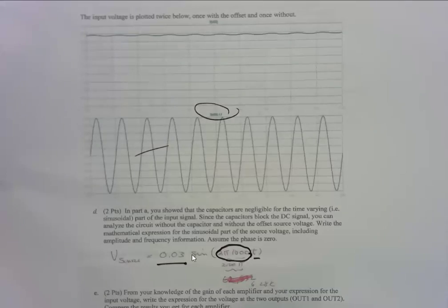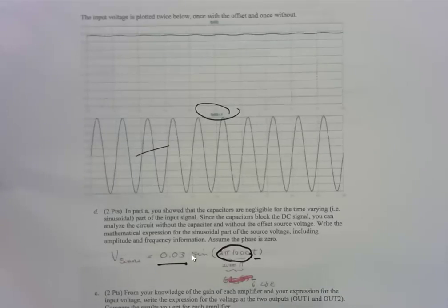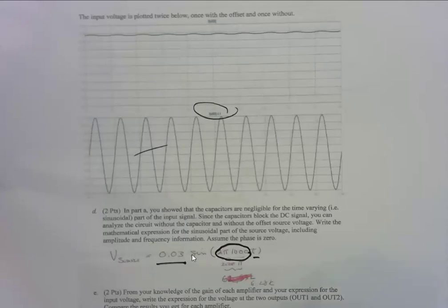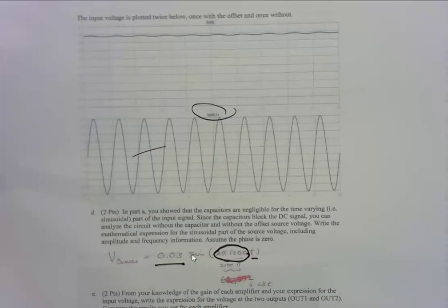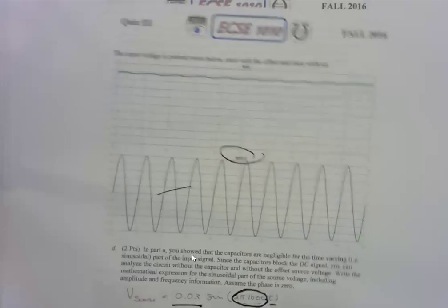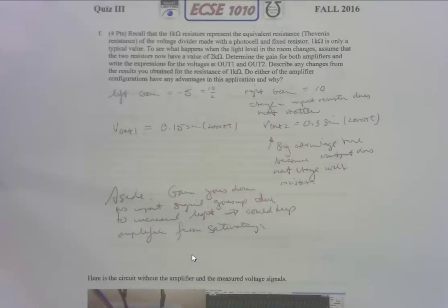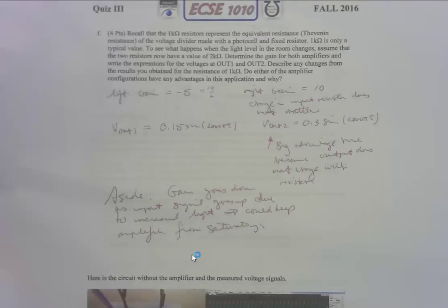From the knowledge of the gain of each amplifier and your expression for the input voltage, write the expression for the voltage at the two outputs and compare the results you get from each amplifier. The output voltage for each amplifier, they're going to be equal in magnitude but opposite signs. It's going to be 0.3 because it's 10 times bigger. Remember it was 0.03. There should actually be a sine expression right here that got left out and this stays the same.